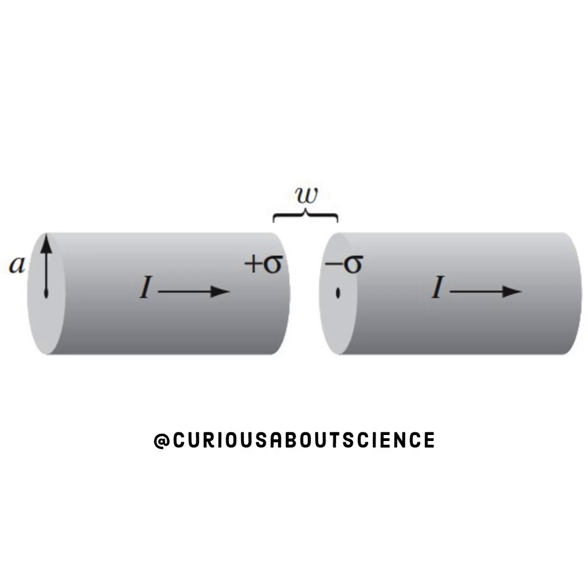Alright, so let's look at our situation. We have a cylinder here that's cut in half, or wire cut in half, separated by distance W, with plus sigma on one side, minus sigma on the other, current running from left to right, radius A.